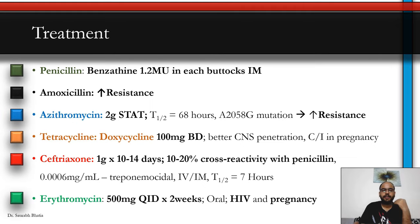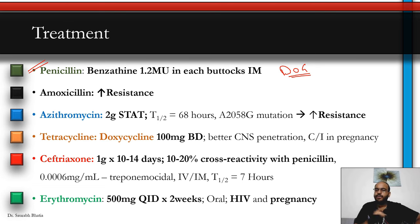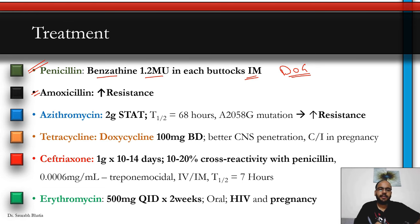Now for treatment: penicillin is the drug of choice with nearly 100% cure rate and practically no resistance reported. Benzathine penicillin 1.2 million units in each buttock intramuscularly is given once for early/primary infections and three times one week apart for secondary and tertiary syphilis. Other antibiotics have been tried — amoxicillin has increasing resistance and is not recommended. CDC recommends benzathine penicillin or penicillin G parenterally; if the patient is allergic, desensitize and give penicillin.